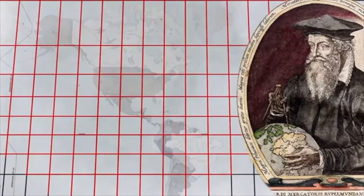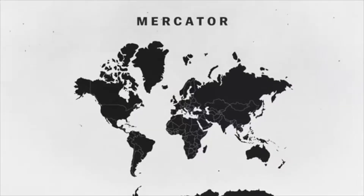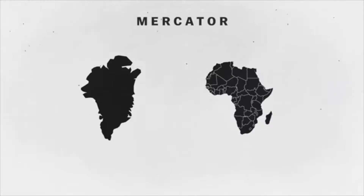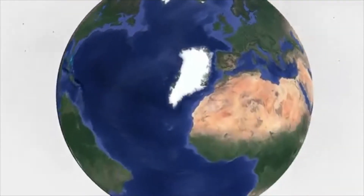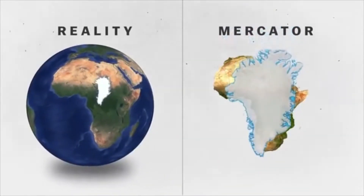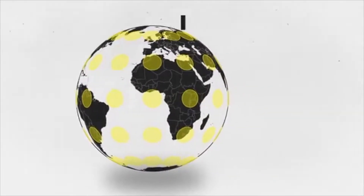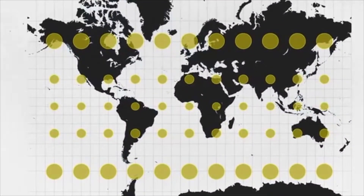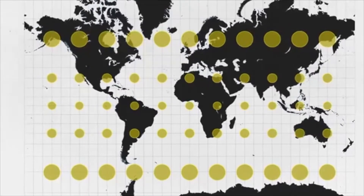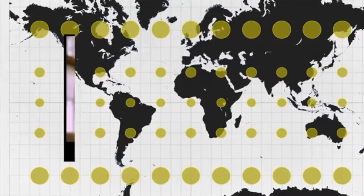But that created some other problems. Where the Mercator fails is its representation of size. Look at the size of Africa as compared to Greenland — on the Mercator map, they look about the same size. But if you look at a globe for Greenland's true size, you'll see that it's way smaller than Africa, by a factor of 14 in fact. If we put a bunch of dots onto the globe that are all the same size and then project that onto the Mercator map, the circles retain their round shape but are enlarged as they get closer to the poles.